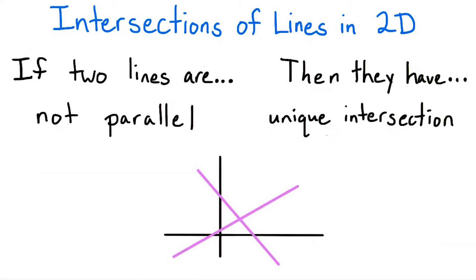If two lines are not parallel, then they will have an intersection at a single point.